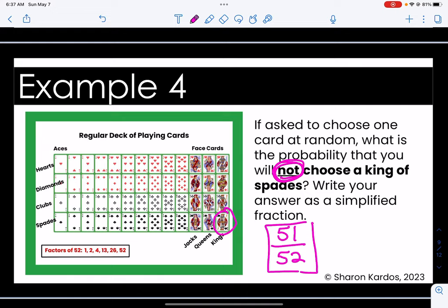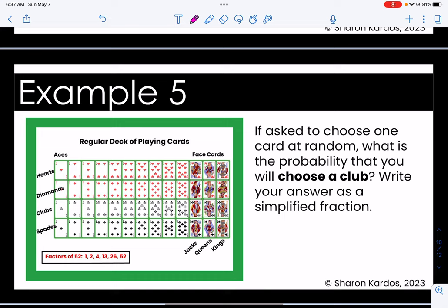All right we're going to do one more example problem. Take a minute, read the problem. If you need to stop the video work it out and then come back. If asked to choose one card at random what is the probability that you will choose a club? Write your answer as a simplified fraction. Well I know all of these cards are clubs. And if I counted them up I would know that's 13 because we have 10 numbered cards and then we have three face cards. So 13 out of the 52 cards are clubs.